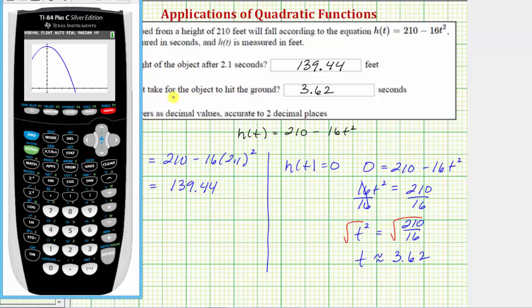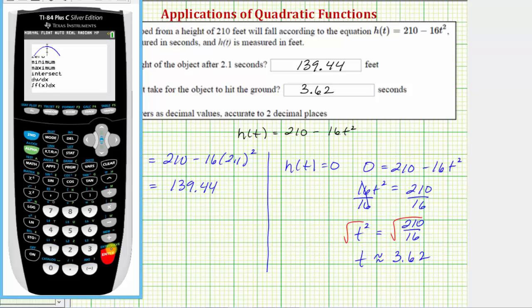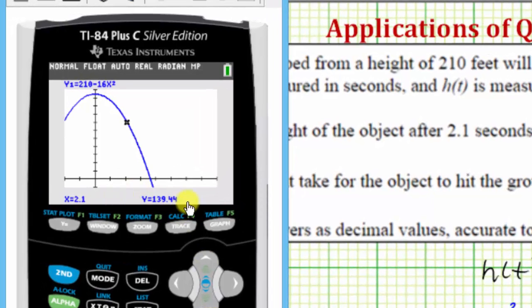To determine the height after 2.1 seconds graphically, press second trace for calculate and select option one for value. Enter the x value of 2.1 — which represents time in seconds — and press enter. Notice how the y value, which is really the function value h(t), is 139.44, confirming what we found algebraically.